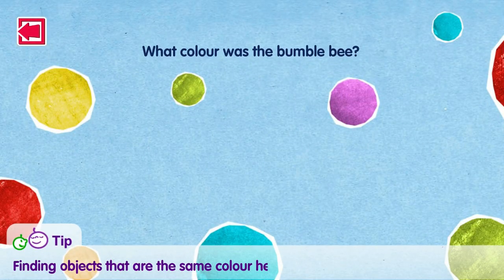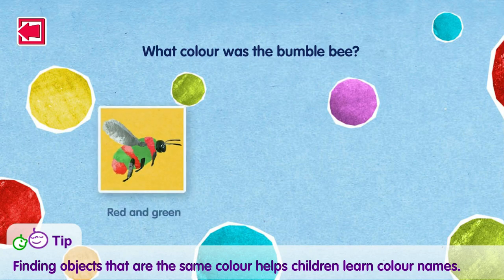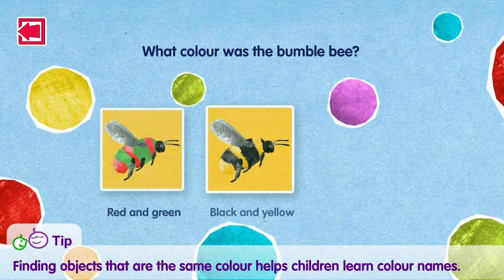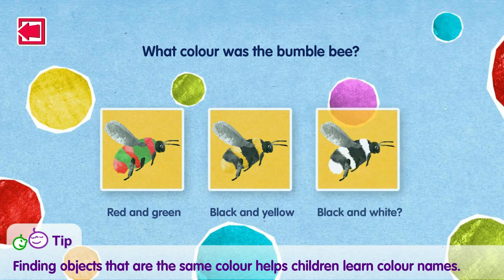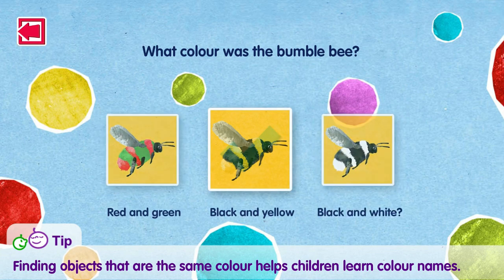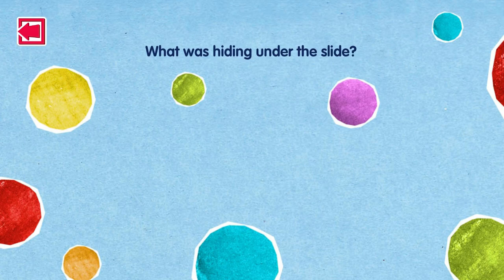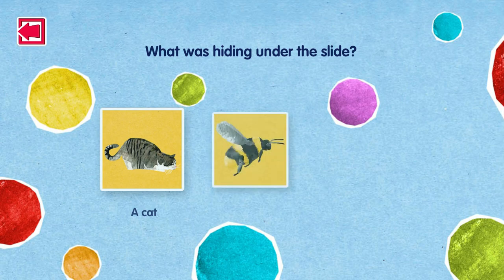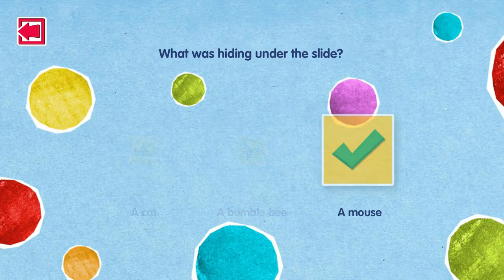What colour was the bumblebee? Red and green, black and yellow, black and white. That's right! What was hiding under the slide? A cat! A bumblebee! A mouse! That's right!